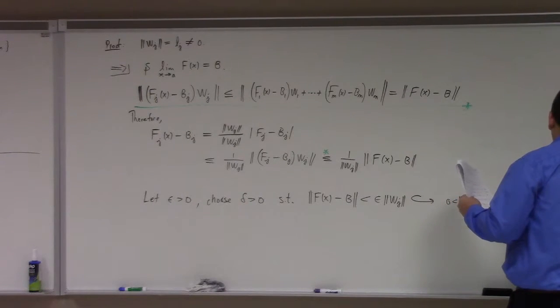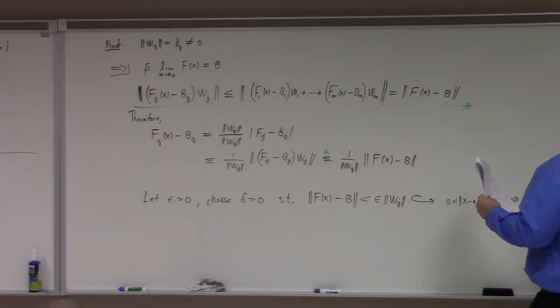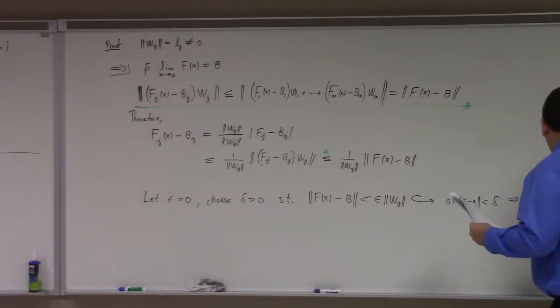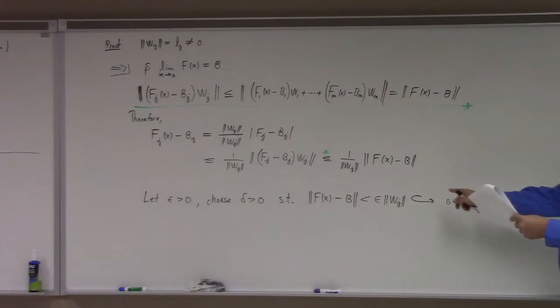is less than epsilon times the norm of wj by our previous argument, but then by our choice of, oh I'm sorry, I'm skipping. What did I prove? So it's less than or equal to 1 over the norm of wj times the norm of f of x minus b, right? But again, this we chose to be less than what? Epsilon times the norm of wj. So the norms of wj cancel, and you just get epsilon.